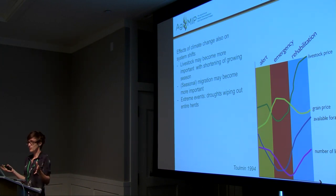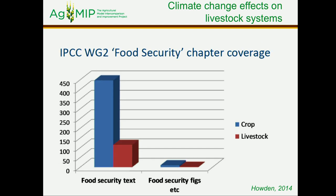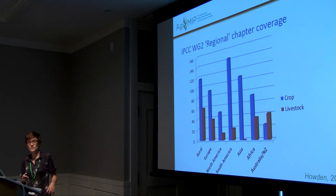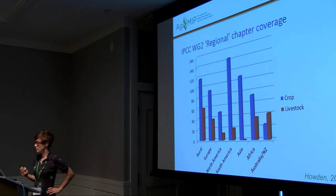Notwithstanding the importance of livestock systems for agriculture globally and the importance of climate change on these systems, we actually know very little. There has been very limited attention in the global research community on the effects of climate change on livestock. These pictures, borrowed from Mark Howden, nicely illustrate the discrepancy between crops and livestock in various IPCC chapters, showing that livestock scientists have a lot of catching up to do with crop modelers.